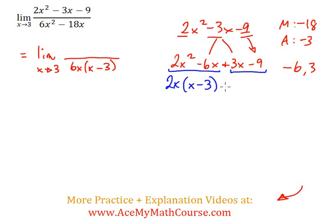What about between 3x and negative 9? Well, we can factor out a 3. 3x divided by 3 is x. Negative 9 divided by 3 is negative 3. These must be the same, and they are, which is a good thing. If they weren't, we probably did something wrong factoring this trinomial.